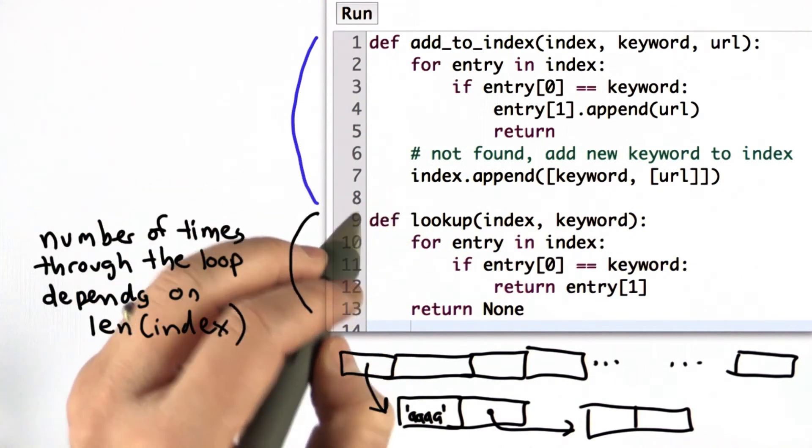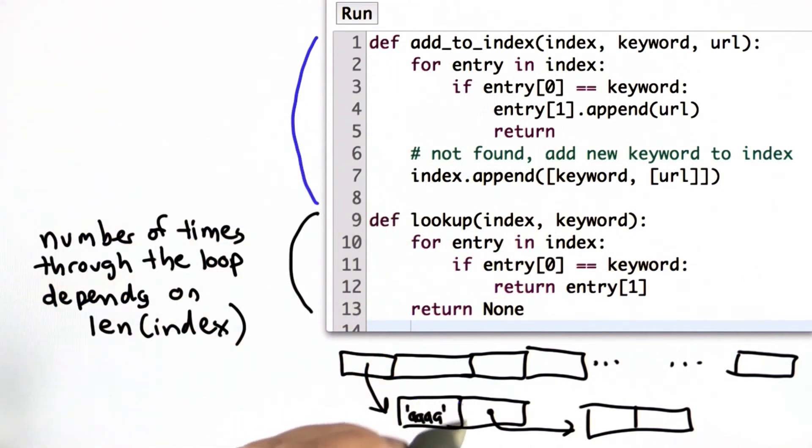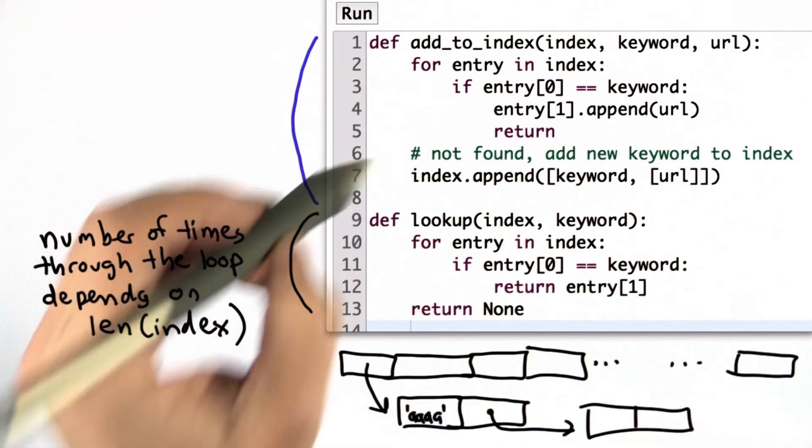So this means that the first entry we add will always be at the beginning. That's why the AAAA with eight A's is first. And the last one that we add will be at the end.